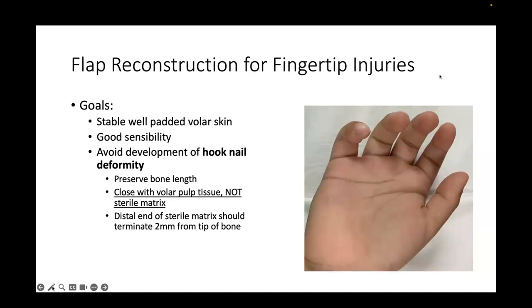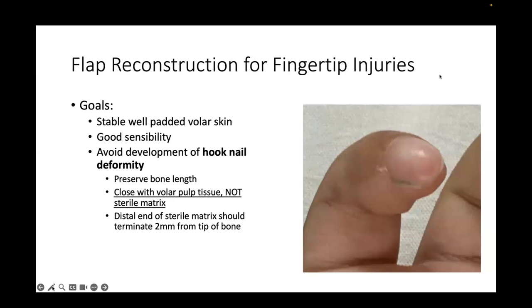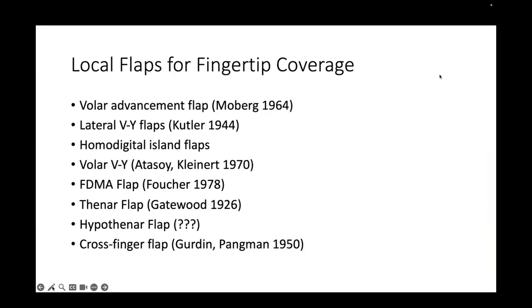For flap reconstruction of fingertip injuries, the goals are to have well-padded volar skin, good sensibility, and avoiding hook nail deformity. This involves not only preserving bone length but also closing with volar pulp tissue and not the sterile matrix. If the sterile matrix rolls over the end of the finger, that's what leads to hook nail deformity. The distal end of the sterile matrix should terminate two millimeters from the tip of the bone. Here is a catalog of local flap options available for fingertip coverage.